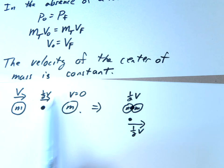So notice the whole system and definitely the center of mass would be moving with one-half V. So our initial is one-half V, our final is one-half V. In this case it's constant.